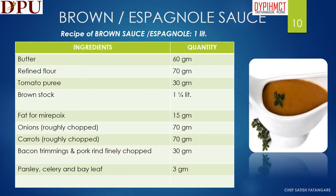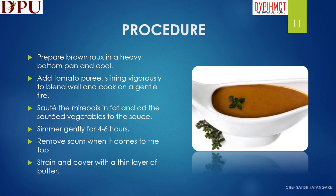In this slide we will discuss about the brown sauce. The ingredients required to prepare 1 liter of brown sauce are butter, refined flour, tomato purée, brown stock, onions, carrots, bacon trimmings and pork rind, parsley stems, celery and bay leaf. To prepare brown sauce: prepare brown roux in a heavy bottom pan and cool. Add tomato purée, stirring vigorously to blend well and cook on a gentle fire. Sauté the mirepoix in fat and add the sautéed vegetables to the sauce. Simmer gently for 4–6 hours. Remove scum when it comes to the top. Strain and cover with a thin layer of butter.